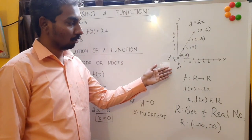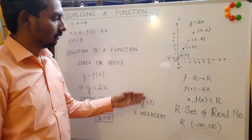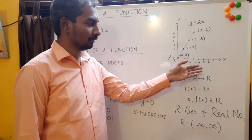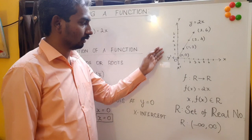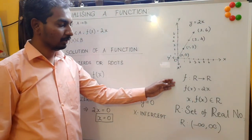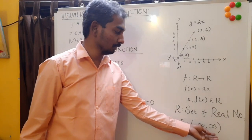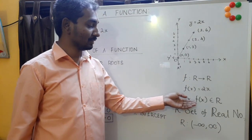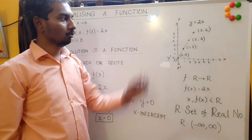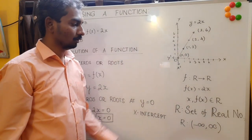You have the coordinates or ordered pairs which can be plotted on a graph. If you plot those values considering elements of set A on the X axis and elements of set B on the Y axis, you will plot (0,0), (1,2), (2,4), and (3,6). But if you extend that function to be a function over the real numbers, extending from minus infinity to infinity, for the same relation F(X) = 2X where X and F(X) belong to R, then you can draw a straight line connecting these dots. What you get for Y = 2X is a straight line passing through the origin. This is how you visualize a given function over its defined set.